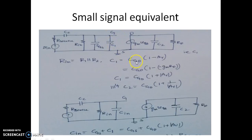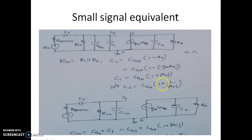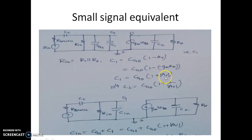C1 is given by the expression CGT into (1 minus AB). And C2 is given by CGT into (1 plus 1 over AB). The reason it becomes plus is because for the CS amplifier, V2 by V1 — that is the output voltage by input voltage — is minus Gm into Rd. That is why the minus becomes plus here.